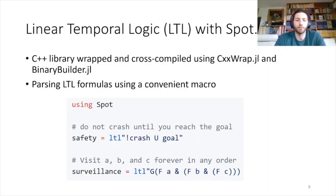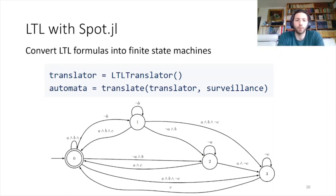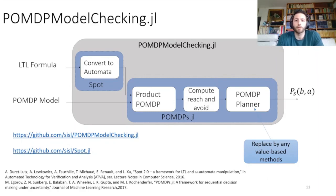Spot.jl has two main functionalities for our model checking use case. The first is to parse LTL formulas using convenient string macros from Julia — we can express safety properties like 'do not crash until you reach the goal,' or surveillance mission goals like 'visit A and B forever.' Spot can also convert the temporal logic formula into a finite state machine: using the translate function, we obtain an automaton corresponding to the surveillance formula. This automaton is very useful because we can combine it with a POMDP model to translate any model checking problem using an LTL formula into a reachability problem.